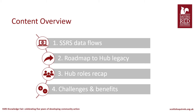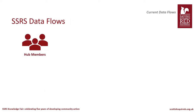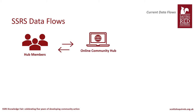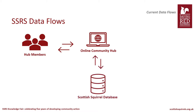Starting with our data flows: staff and volunteers can add sightings, control and survey data, as well as contact details, training records and volunteering hours directly through our website. Anyone with a Hub account can view, edit and export their data. All records entered onto the Hub are automatically added to our backend Scottish Squirrel database — a nationwide dataset for squirrel records in Scotland that's secure, protected and backed up daily for resilience.